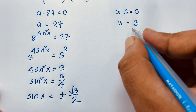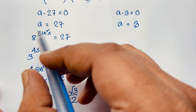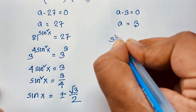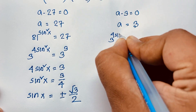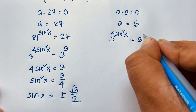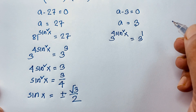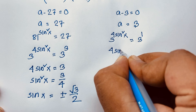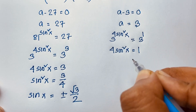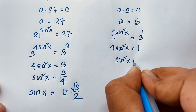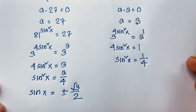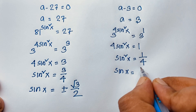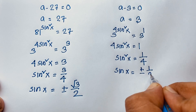For the second case, a = 3: 81^(sin²x) = 3, which is (3⁴)^(sin²x) = 3¹, so 4·sin²x = 1, giving sin²x = 1/4. Dividing both sides by 4 gives sinx = ±1/2.